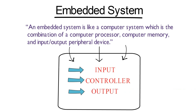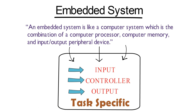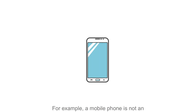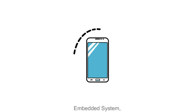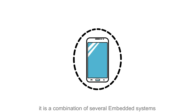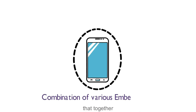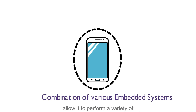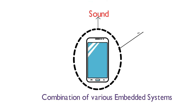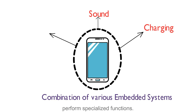Their main characteristic is that they are task specific — they perform a single task within a larger system. For example, a mobile phone is not an embedded system. It is a combination of several embedded systems that together allow it to perform a variety of general purpose tasks. So the embedded systems within it perform specialized functions.